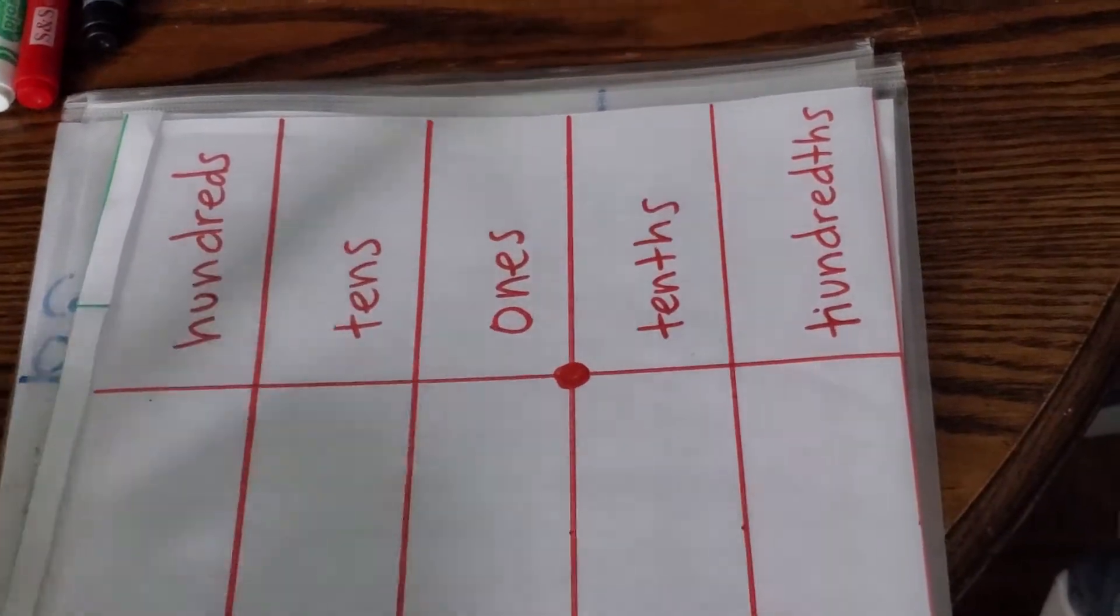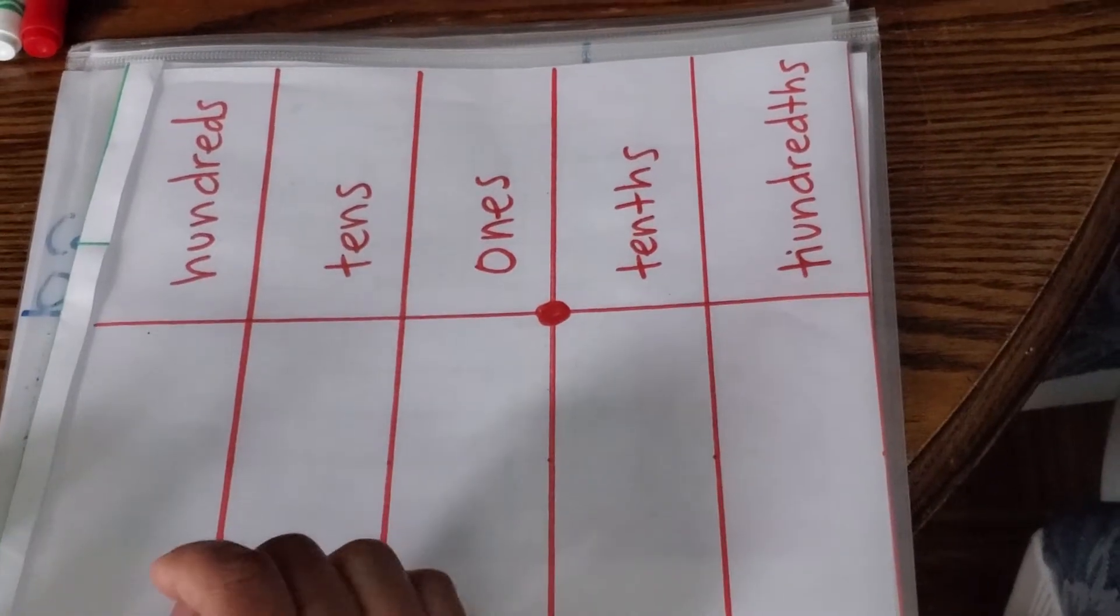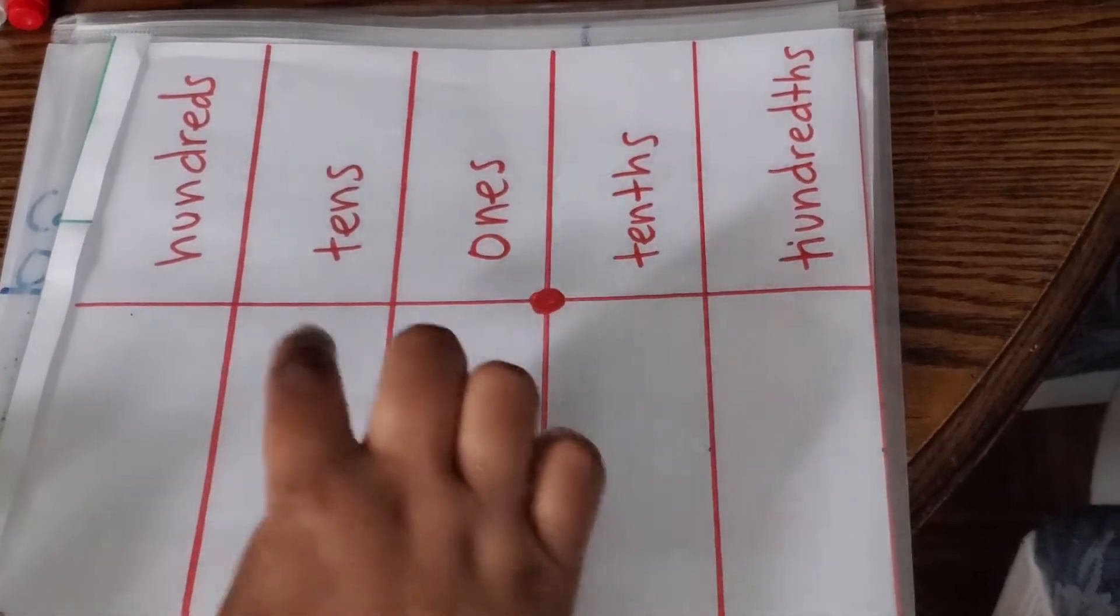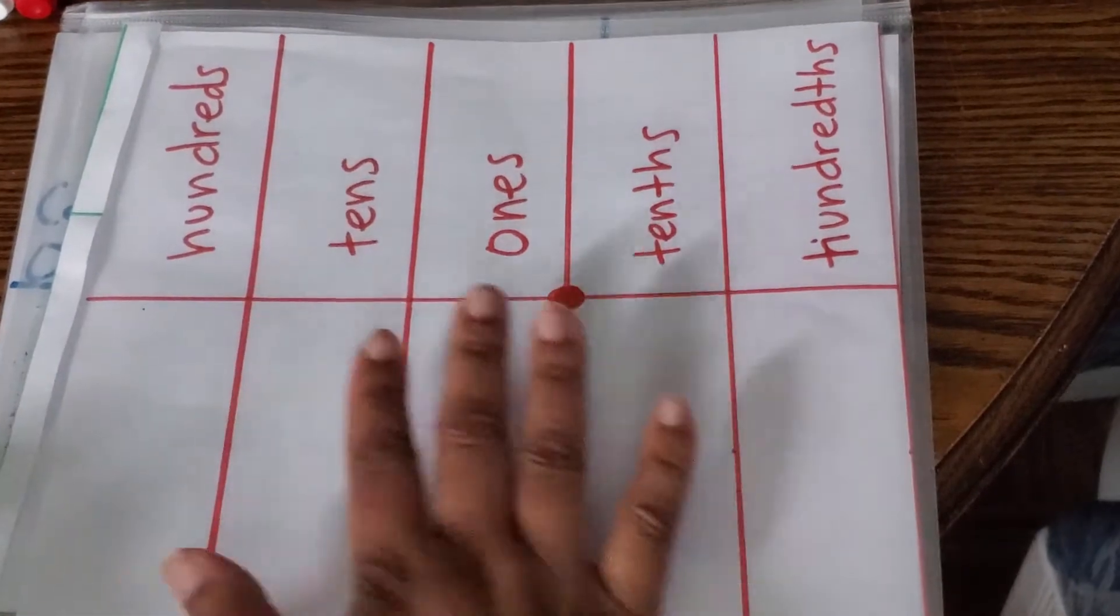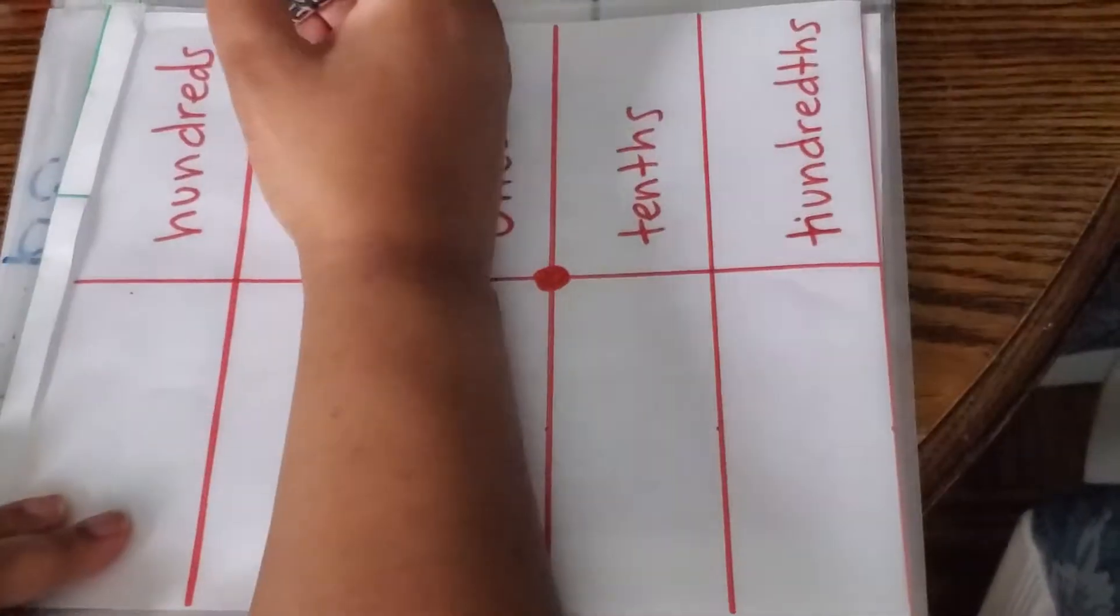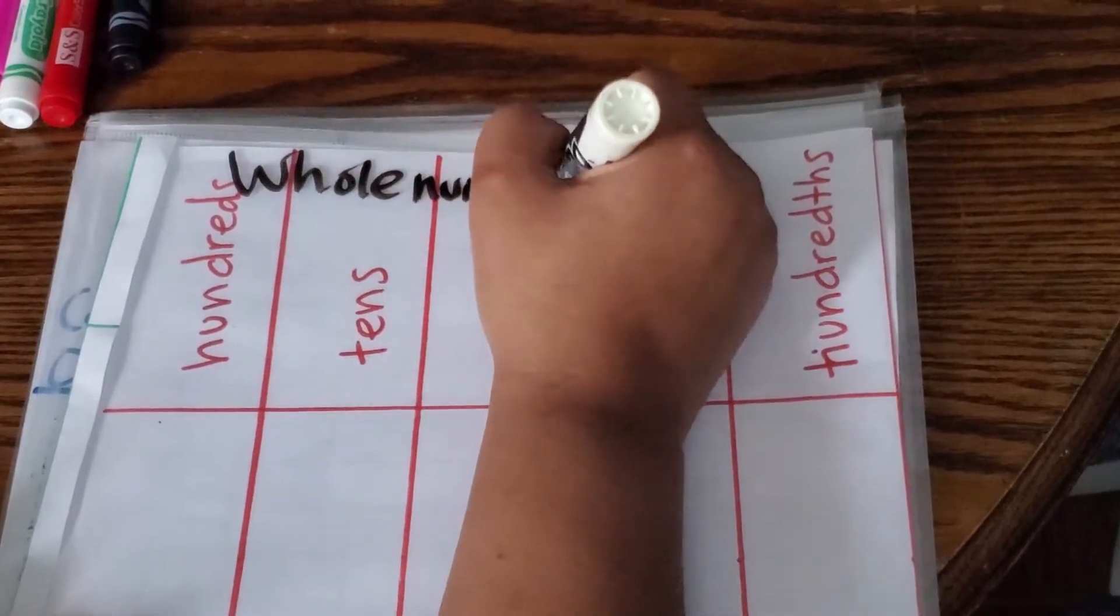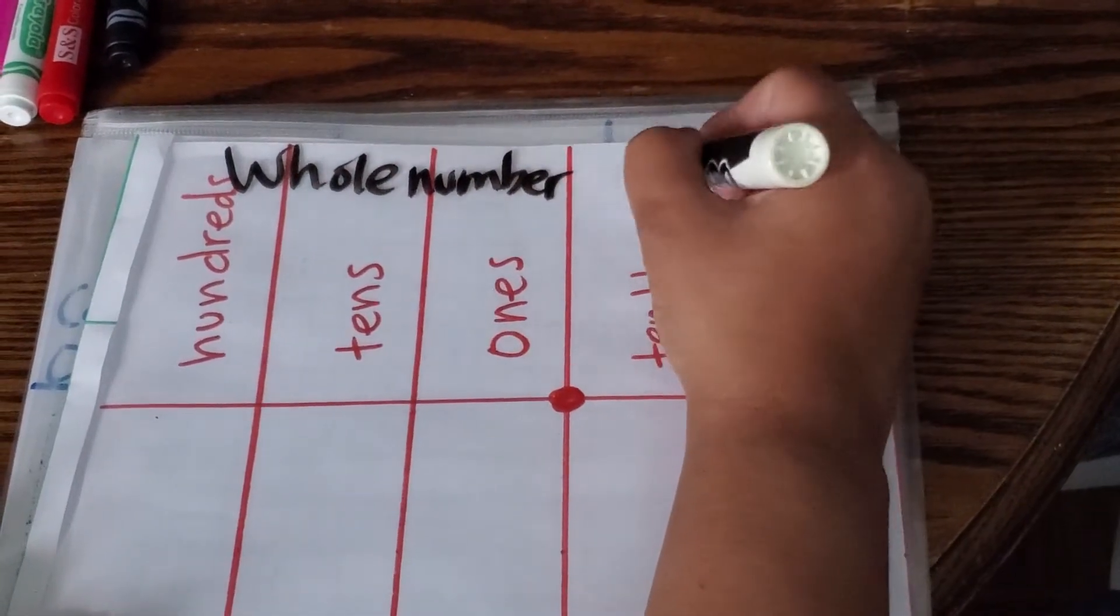Let's say that you have a place value chart that looks like this. We haven't worked with one that looks like this. You've got hundreds, tens, ones. These are whole numbers.